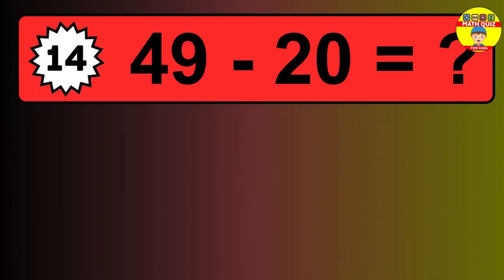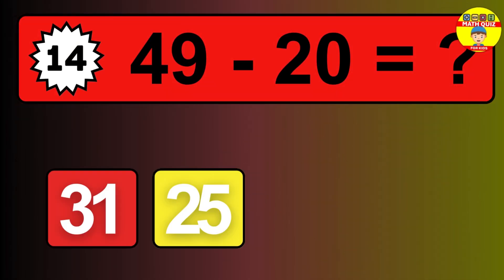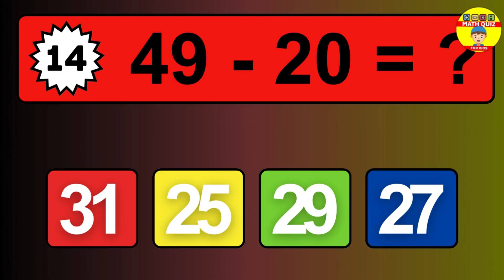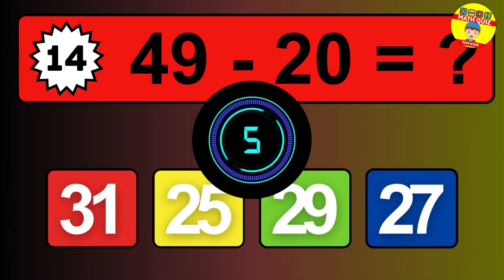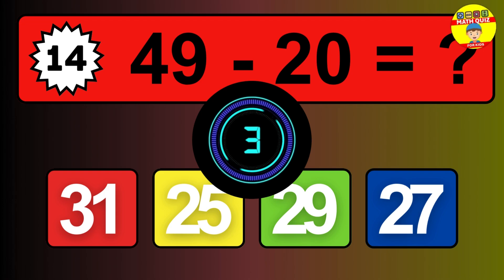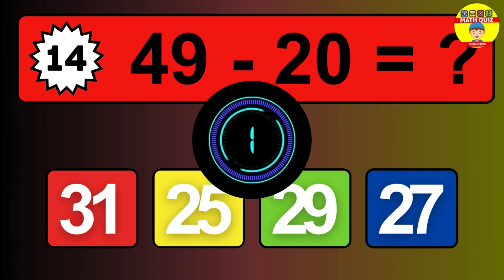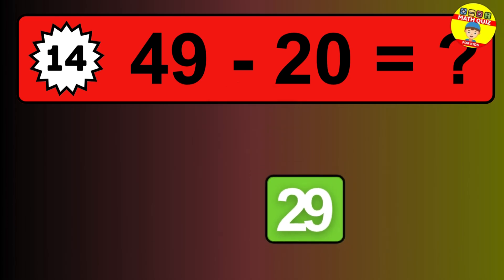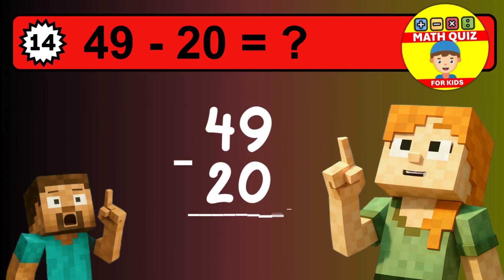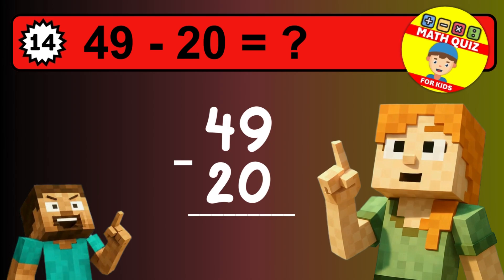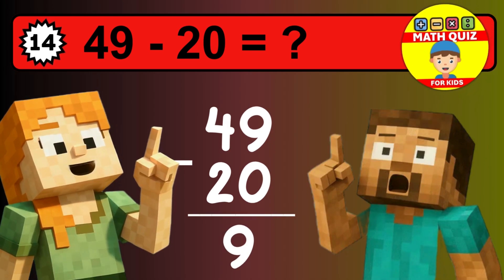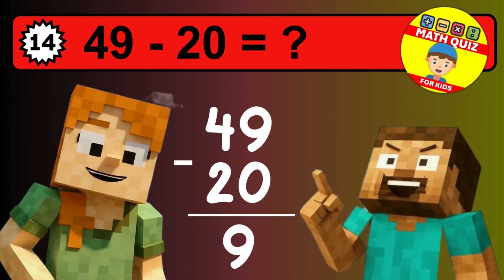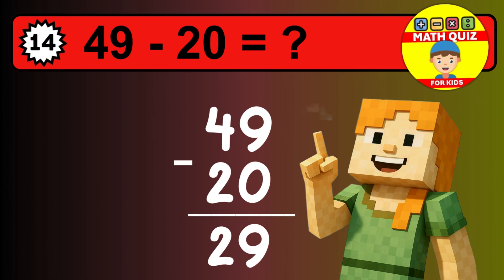What is 49 minus 20? Time to think. Let's solve this step by step. We start with the units: 9 minus 0 is 9. Then we go to the tens: 4 minus 2 is 2. The final answer is 29.